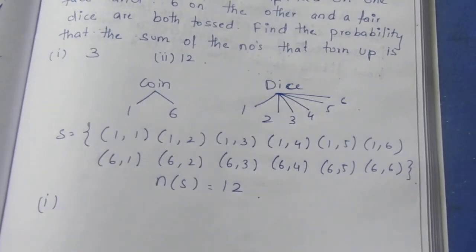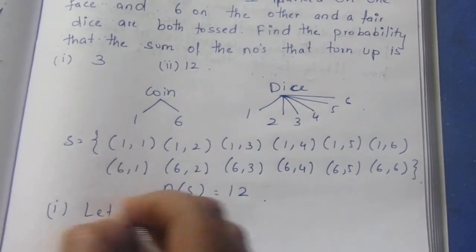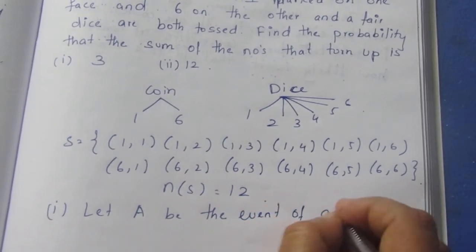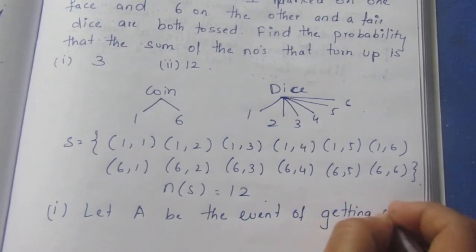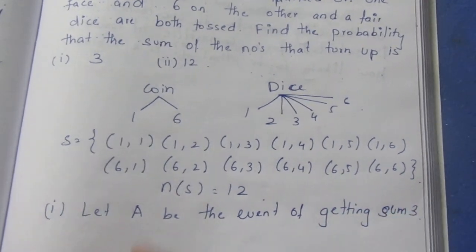Find the probability that the sum of the numbers that turn up is 3. Let A be the event of getting sum 3.